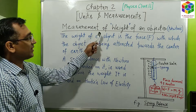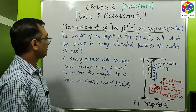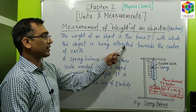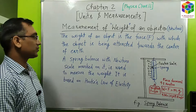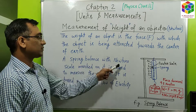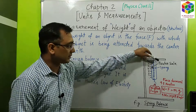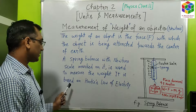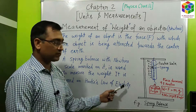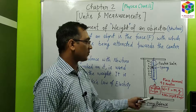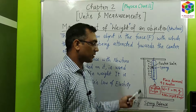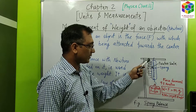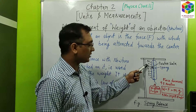Now let us see the measurement of weight of an object in Newtons. The weight of an object is the force with which the object is being attracted towards the center of the earth. A spring balance with Newton's scale marked on it is used to measure the weight. It is based on Hooke's law of elasticity. Here, this is the spring balance arrangement — there is a hook, a spring, and a pointer scale marked with Newton.